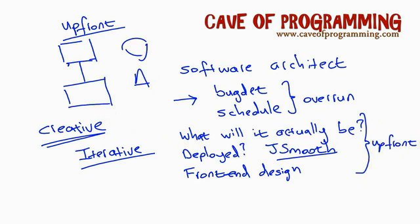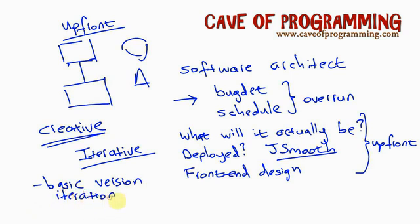The idea behind an iterative approach is that you first write a kind of outline version of your software, and this should be really, really quick — you should be able to get some basic version up and running in days or hours. That version is going to be missing most of the functionality, but it should provide a starting point and a framework in which to add new functionality. Once you've got your basic version running, you take a breather, look at what the next step will be, and start to implement it. You go on like this through different iterations until you reach a point where you've got software that is releasable.